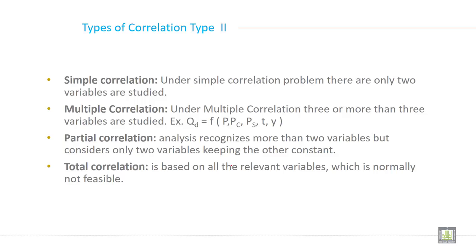What is simple correlation? Under simple correlation problem there are only two variables are studied. When you have only two variables and you want to examine the relationship between them, it is called simple correlation.